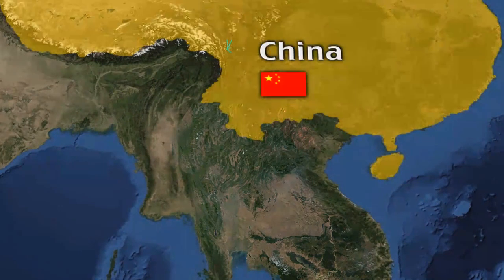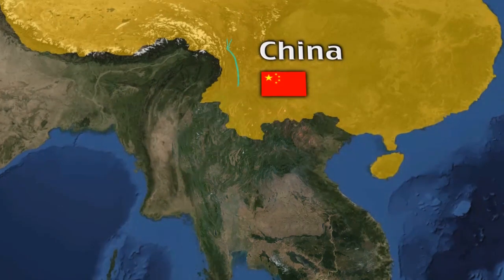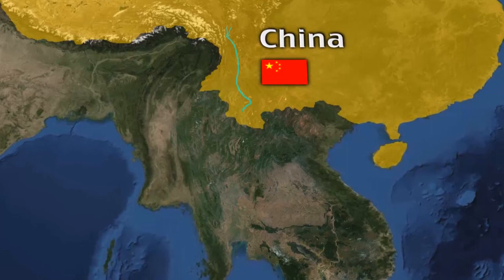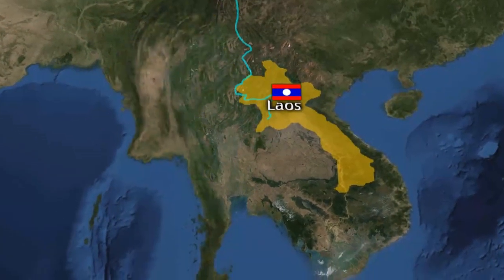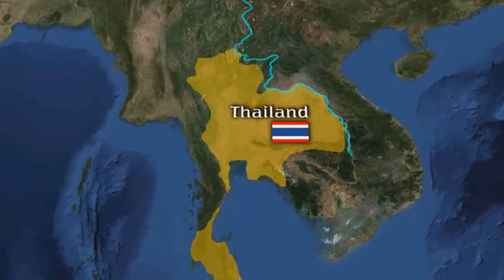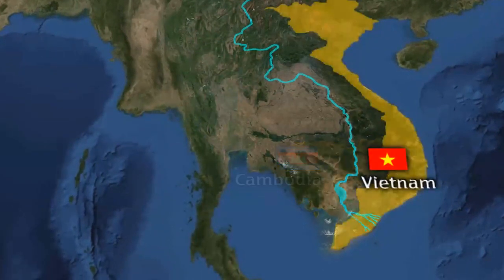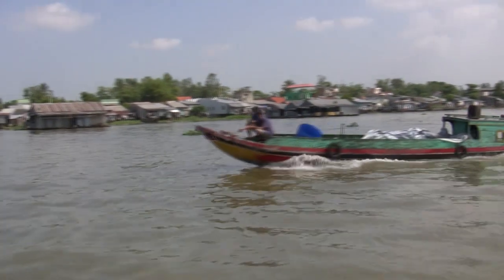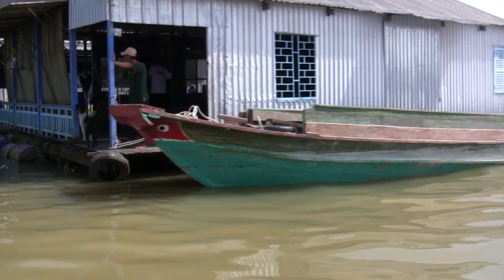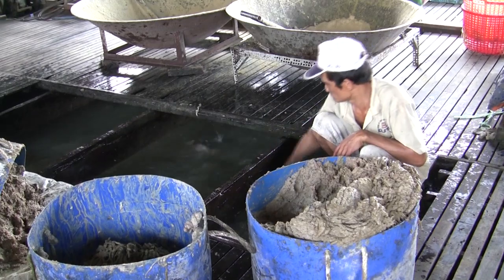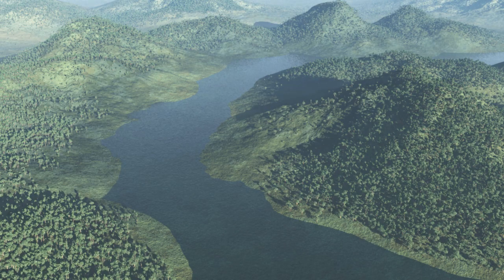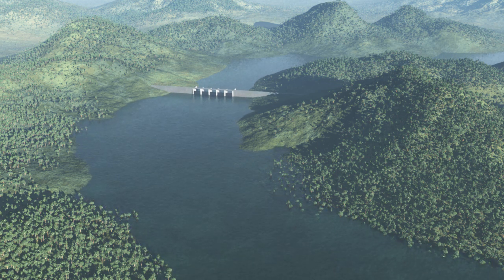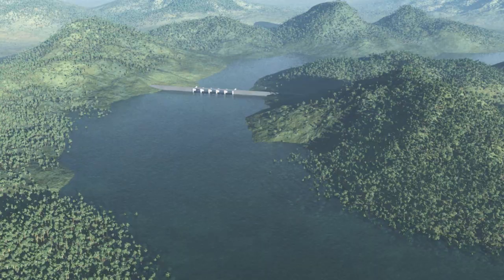The Mekong is one of the world's great rivers, cascading through six Asian countries from the Tibetan Plateau to the South China Sea, connecting China, Myanmar, Laos, Thailand, Cambodia, and Vietnam. How one country uses or changes the waters of the Mekong upstream can have important implications for the health of the river and people downstream. Increasing demands for hydropower and irrigation have prompted several countries to plan the construction of large dams on the Mekong River and its tributaries.